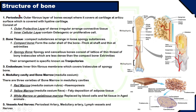The first structure of a bone is the periosteum. It is the outer fibrous layer of bone that surrounds all of the bone except at the articular surface, which is covered by hyaline cartilage. Periosteum consists of an outer protective layer and an inner cellular layer. The outer protective layer is composed of irregular connective tissue, and the inner cellular layer contains osteogenic or proliferative cells such as osteoclasts and osteoblasts.